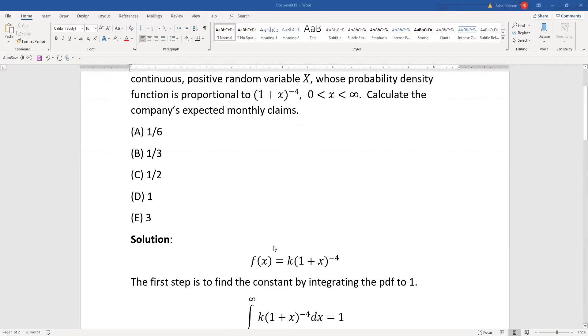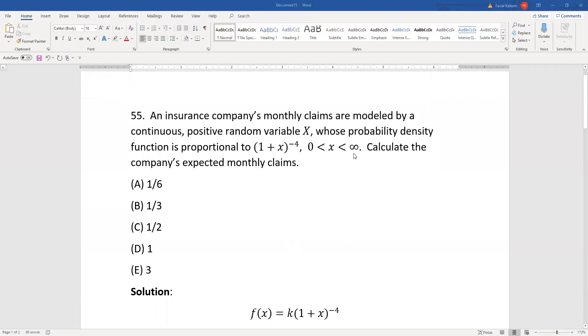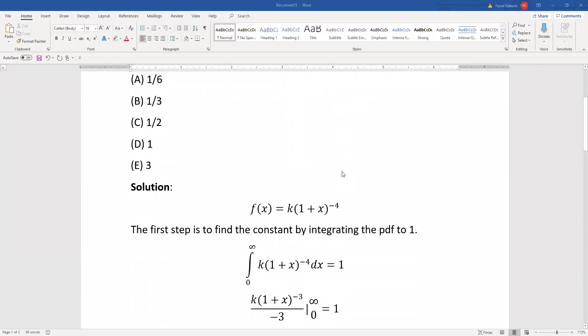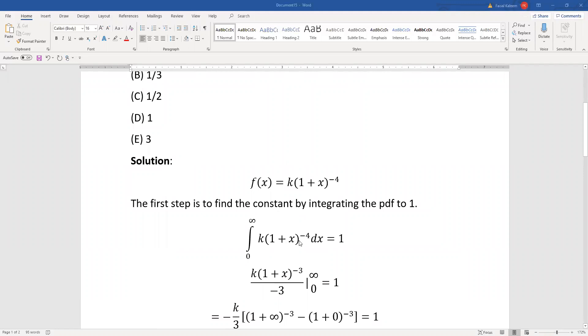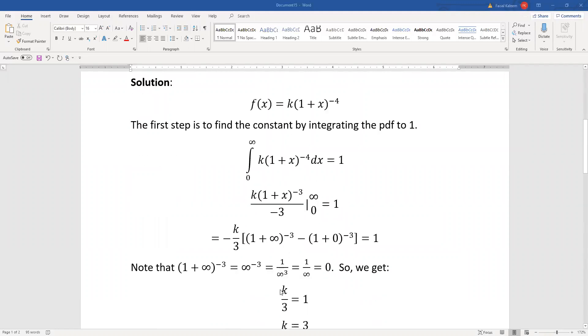So the PDF is non-zero from zero to infinity, K times (1 + x)^(-4). This is a simple power rule: (1 + x)^(-3) over negative three.